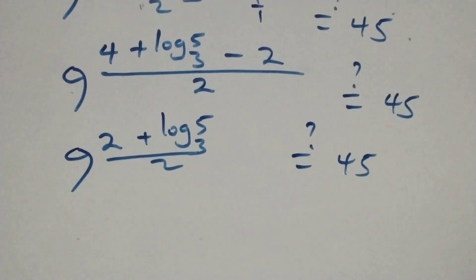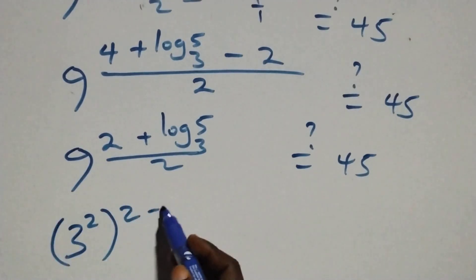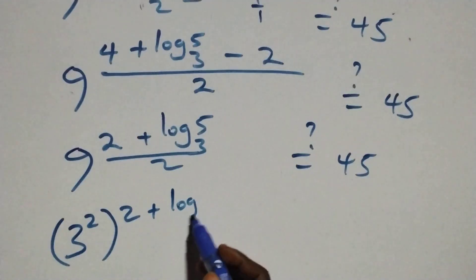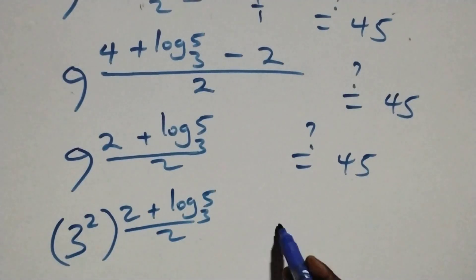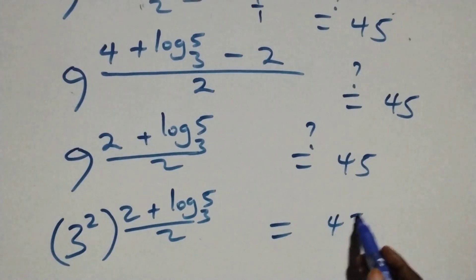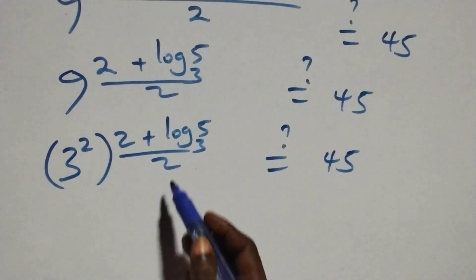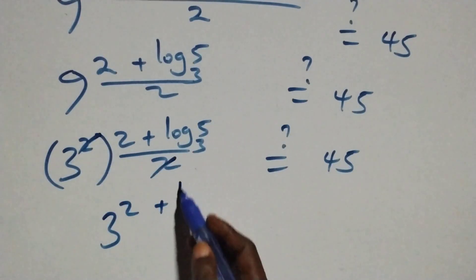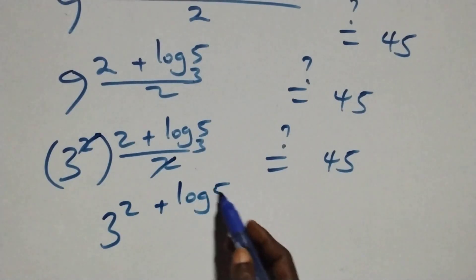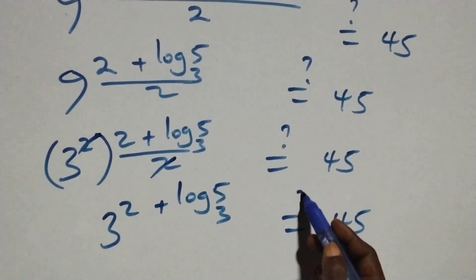We write 9 as 3 squared, so this becomes 3 raised to power (2 plus log 5 base 3 plus log 5 base 3) all over 2, equals 45. The power of 2 in the denominator multiplies through, giving 3 raised to power (2 plus log 5 base 3), equals 45.